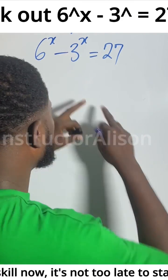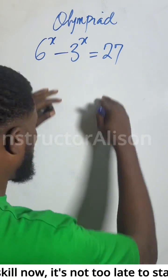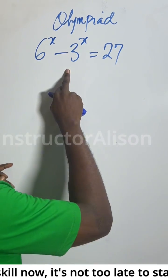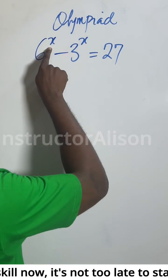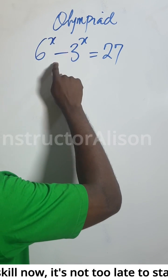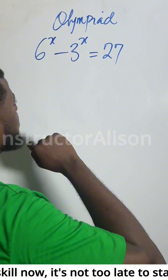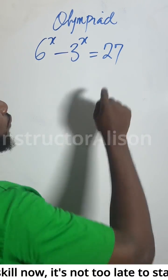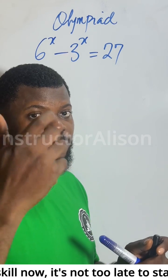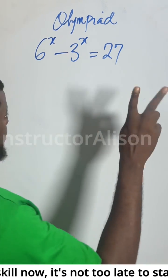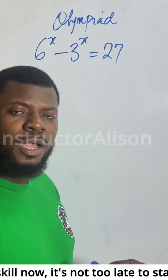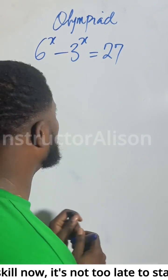You are given a long sheet of paper to show working on this one. We know that by inspection, to solve for x on this particular problem, you want to plug in 2: 6 squared is 36 minus 3 squared is 9, and 36 minus 9 gives you 27. That's by inspection — the result for x is 2. But you are given a long sheet of paper to show your working. How would you do that? That's what I'm here to show you.